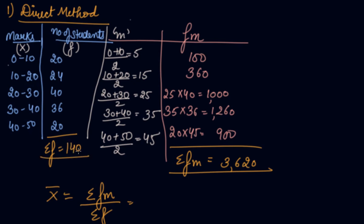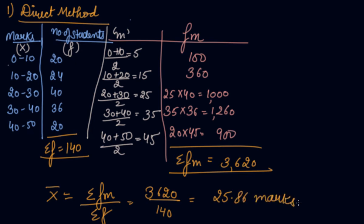Now put the values into the formula: x̄ = Σfm ÷ Σf = 3620 ÷ 140 = 25.86 marks. So the average marks in English by class 10 students is 25.86.